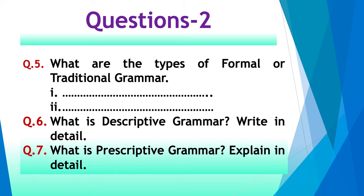Question 5: What are the types of formal or traditional grammar? Write the names: number one, descriptive grammar; number two, prescriptive grammar. Question 6: What is descriptive grammar? Write in detail — write all the points. Question 7: What is prescriptive grammar? Explain in detail. Write all the points and cover everything — don't write briefly or in short.